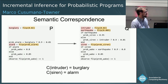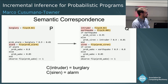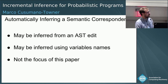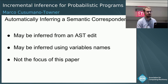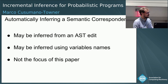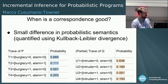In this setting with our two programs, defining the correspondence is straightforward — we represent it as a mapping C from names in Q to names in P. We assume we are provided with a semantic correspondence. Automatically inferring a good semantic correspondence is an interesting area for future work, perhaps using an AST edit distance if choices are named based on the AST.